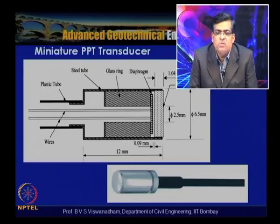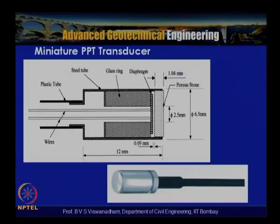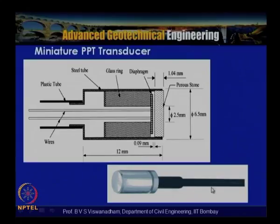Pore water pressure transducers are available from 0.5 bar up to 35 bar — capable of measuring up to 3500 kN/m² of pressure. They have a stainless steel casing with a protection sleeve and cable connecting to the data acquisition system.